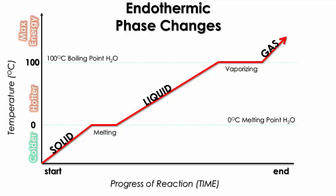Looking at our endothermic phase change, we start at a very cold temperature and work our way up to a very hot temperature. Endothermic means that you're gaining energy, and as you gain energy, you're going from a solid to a liquid to a gas phase. When our solid is gaining heat, we're going to be using the formula Q = MCΔ T, where delta T represents that change in temperature.